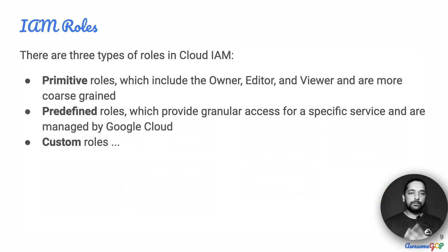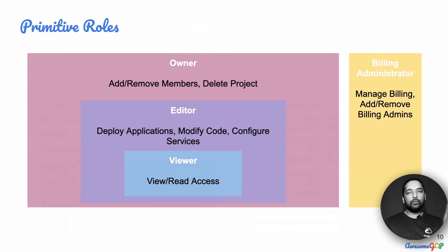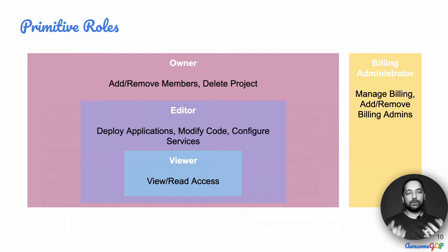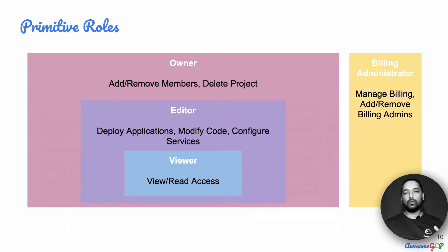In roles themselves, there are three types: primitive, predefined, and custom roles. Primitive roles have a very wide set of permissions, and there are three of them: viewer, editor, and owner (with billing administrator as a separate one). The viewer can list and get resources but can't do anything more. An editor has all viewer permissions plus the ability to modify resources, deploy applications, and configure services. An owner has all editor and viewer permissions plus the ability to remove users, add users, and delete projects.